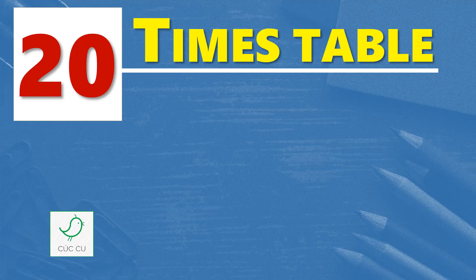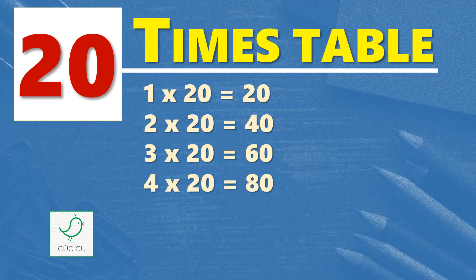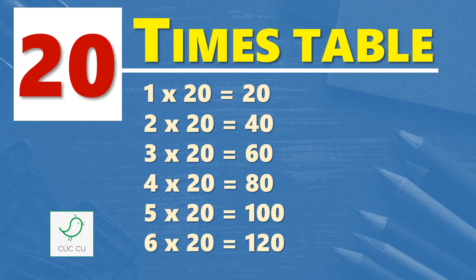Twenty times table. One times twenty is twenty, two times twenty are forty, three times twenty are sixty, four times twenty are eighty, five times twenty are one hundred, six times twenty are one hundred and twenty.